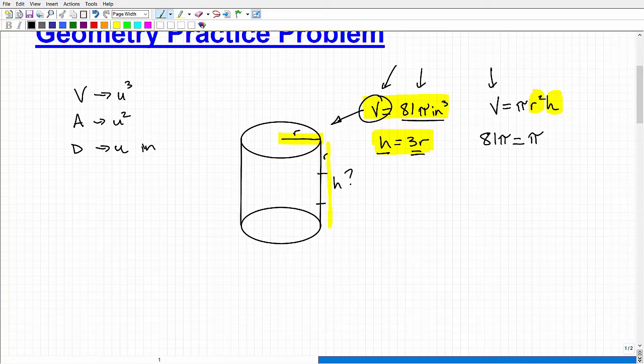So in other words, my height is three times whatever the radius is going to be. So I want to substitute this 3R for this H. So I have an equation in one variable. So we'll have R squared here, but for my height, instead of using H, I'm going to use 3R.